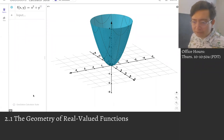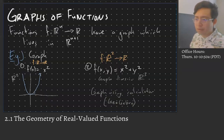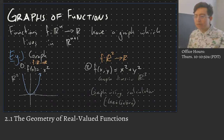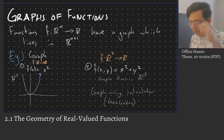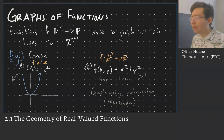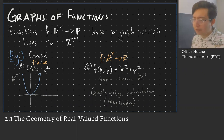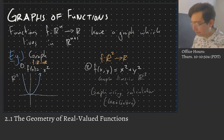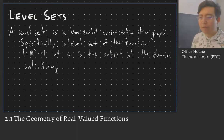You can use computers to help graph these things. There are old-school ways too — you can plug in some points to get an idea of the picture. Once you get used to popular functions like this one, you should be able to look at it and say, 'that looks like a paraboloid.' You can also convert to polar coordinates, and sometimes that makes it easier to see what the picture is. Now let's go to the next topic: level sets.